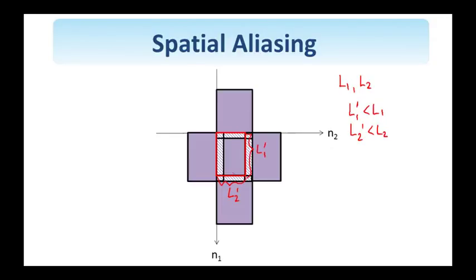this is L1 minus L1 prime, and the number of the columns that are aliased is L2 minus L2 prime.